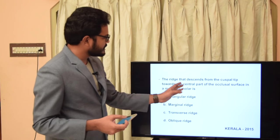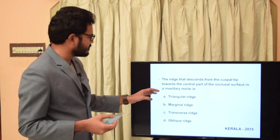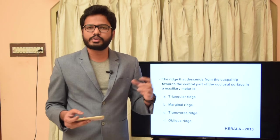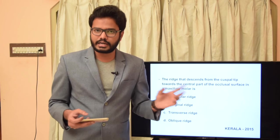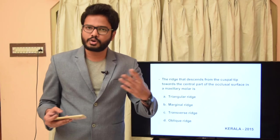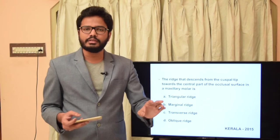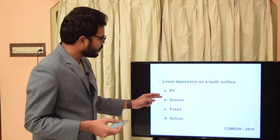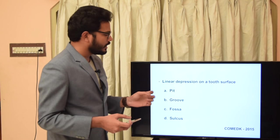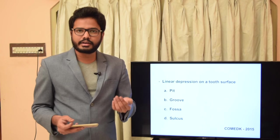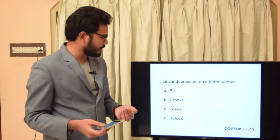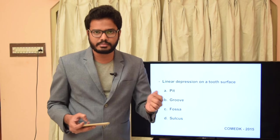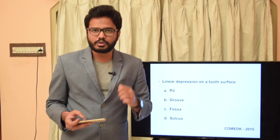The ridge that descends from the cuspal tip towards the central part of the occlusal surface is the triangular ridge. When two triangular ridges of opposite sides meet, it becomes a transverse ridge. If a ridge crosses the surface obliquely it is an oblique ridge. Triangular ridges are characteristically found at the buccal cusp tip of the maxillary first premolar. Regarding linear depression on a tooth surface — asked in COMET 2015 — a groove is a linear shallow depression, while a sulcus is a long depression, a fossa is an irregular depression with grooves terminating at it, and a pit is a pinpoint depression. Answer: groove.